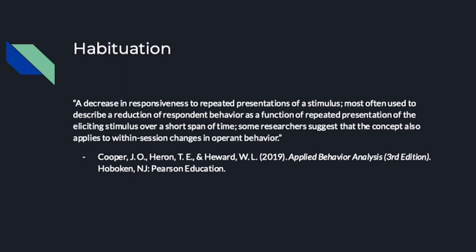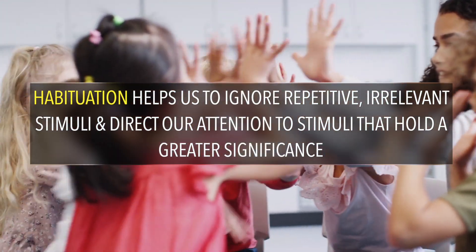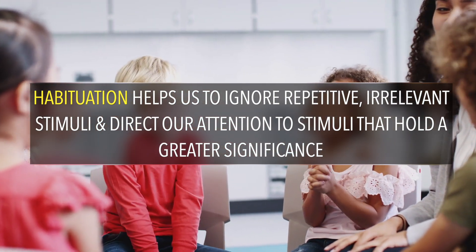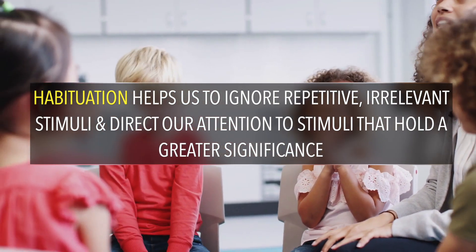The definition of habituation directly from the Cooper textbook reads: a decrease in responsiveness to repeated presentations of a stimulus, most often used to describe a reduction of responded behavior as a function of repeated presentation of the eliciting stimulus over a short span of time. Some researchers suggest that the concept also applies to within-session changes in operant behavior. An example would be you are watching Scary Movie 4 for the first time with all your friends and jump at all of the jump scares. You then watch it two more times on that same day and don't flinch a muscle at the jump scares. You have been habituated.